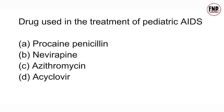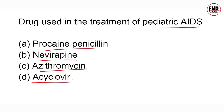Question 39: Drug used in the treatment for pediatric AIDS? Options: Procaine penicillin, Nevirapine, Azithromycin, Acyclovir. Option B is correct — Nevirapine। Nevirapine एक anti-retroviral group की medicine है जो HIV virus के replication को inhibit करती है।